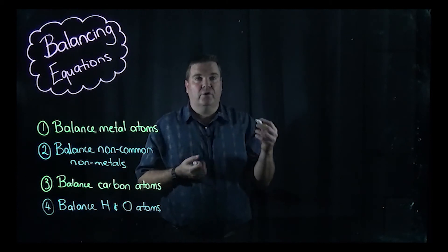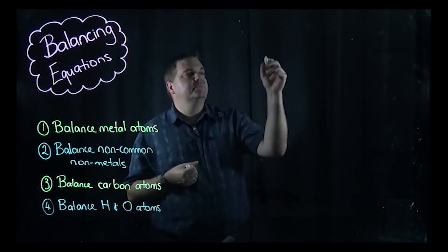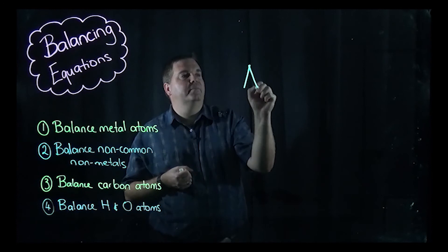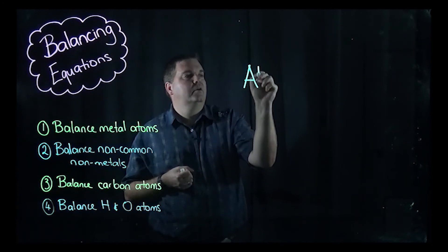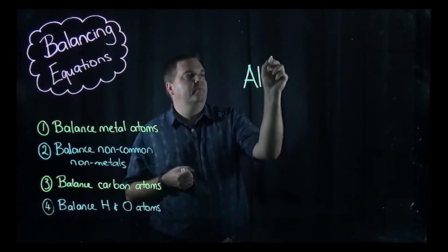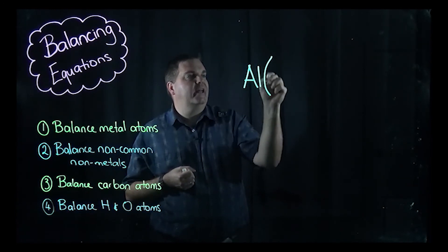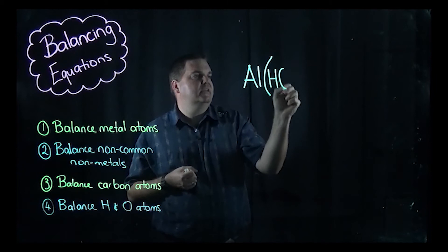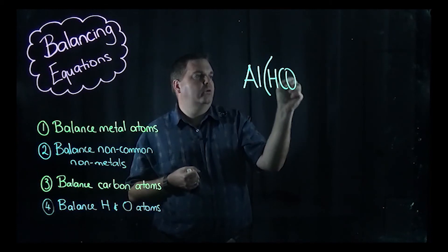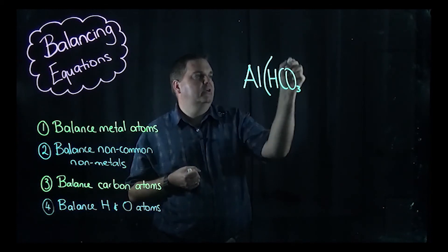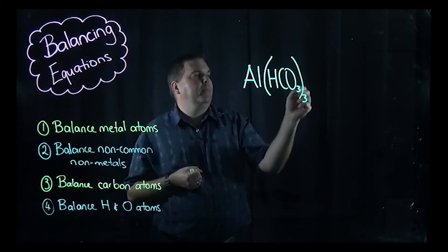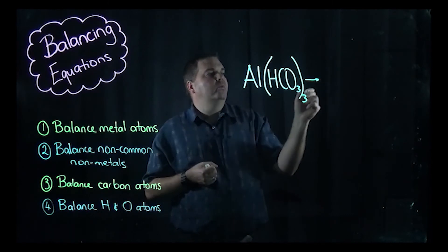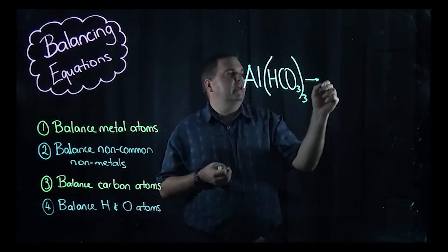The next equation involves brackets. I'm going to look at aluminium bicarbonate — Al(HCO3)3 — and when we heat it, we get products on the right side.